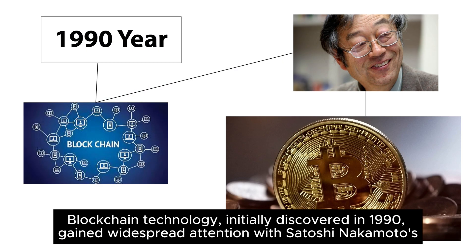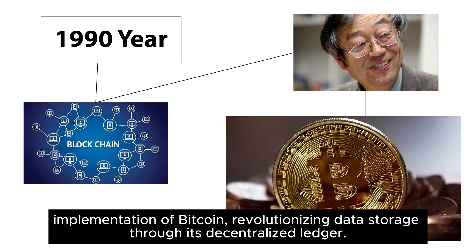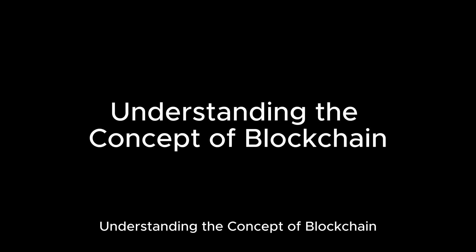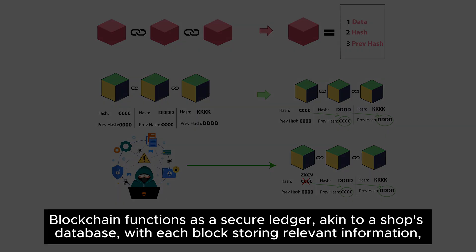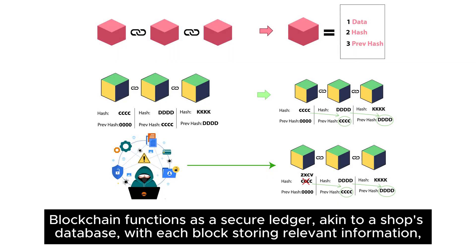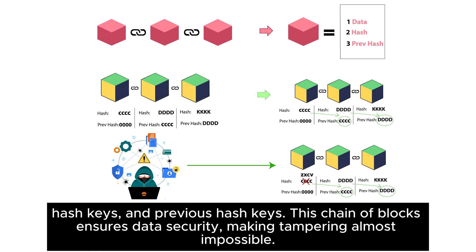Blockchain technology, initially discovered in 1990, gained widespread attention with Satoshi Nakamoto's implementation of Bitcoin, revolutionizing data storage through its decentralized ledger. Blockchain functions as a secure ledger, akin to a shop's database, with each block storing relevant information, hash keys, and previous hash keys.